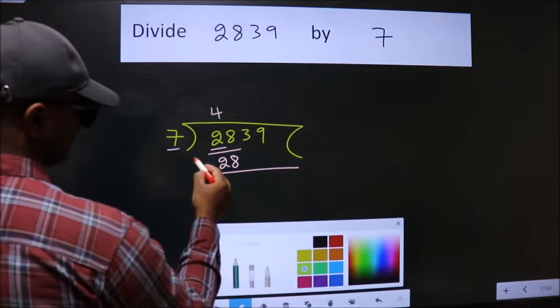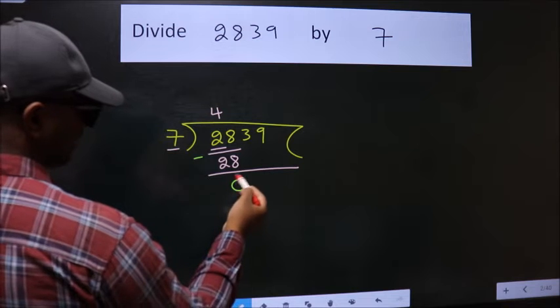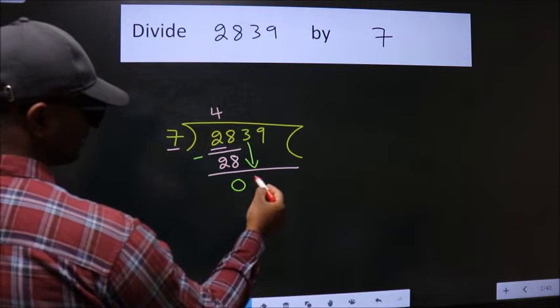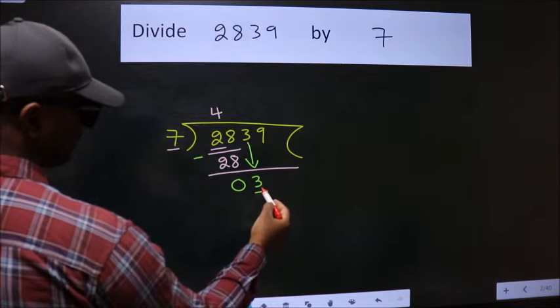Now we should subtract. We get zero. After this, bring down the beside number, so three down. Here we have three.